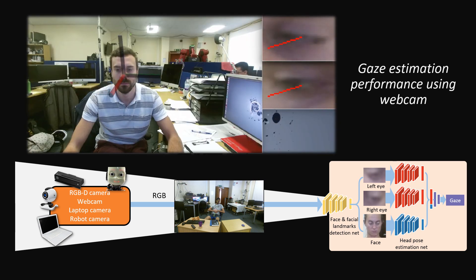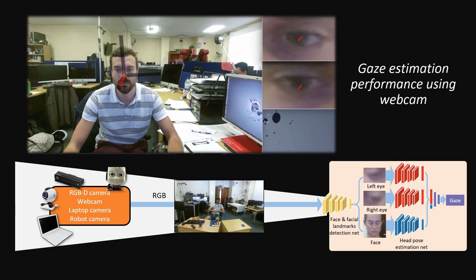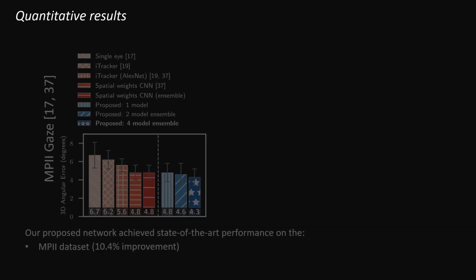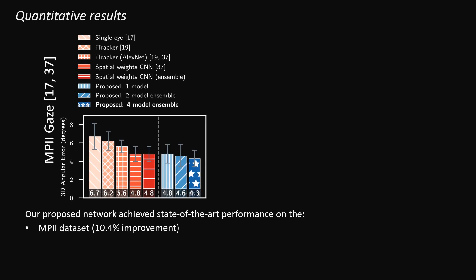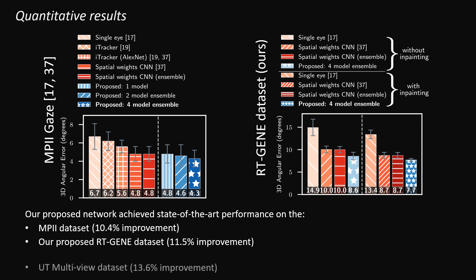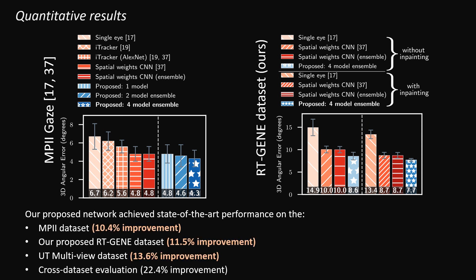Our framework can be used for real-time gaze estimation using any RGB or depth camera. We evaluate our method on various datasets and find that it outperforms the state-of-the-art methods. Importantly, we also found that our network generalises well to other datasets.